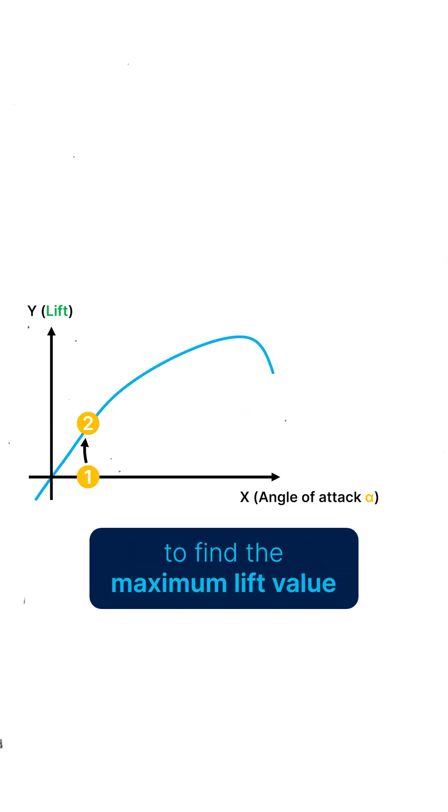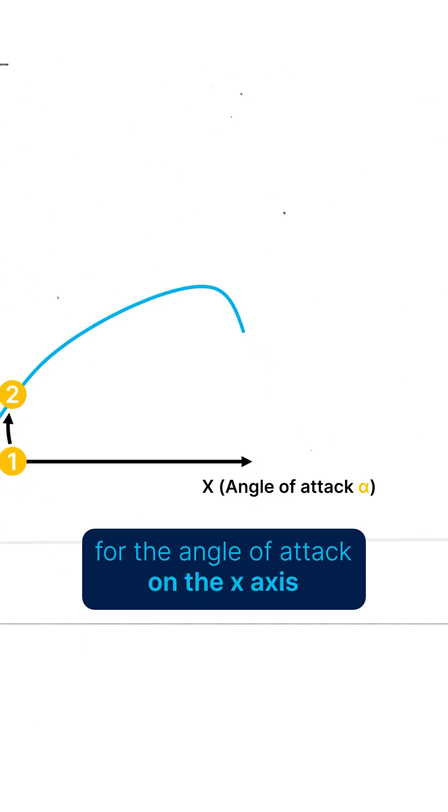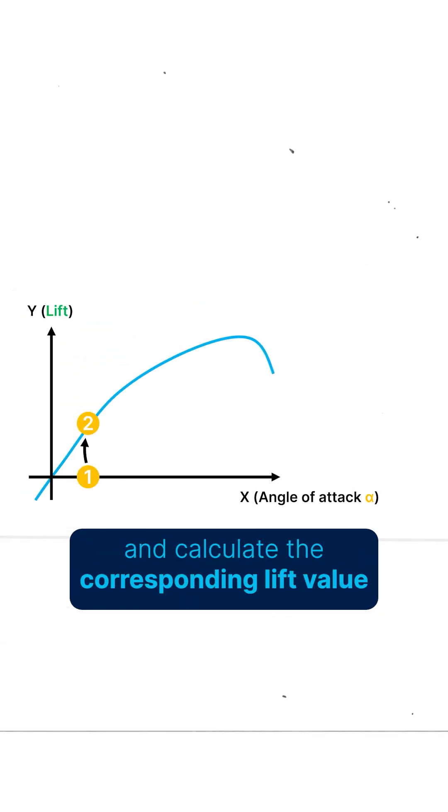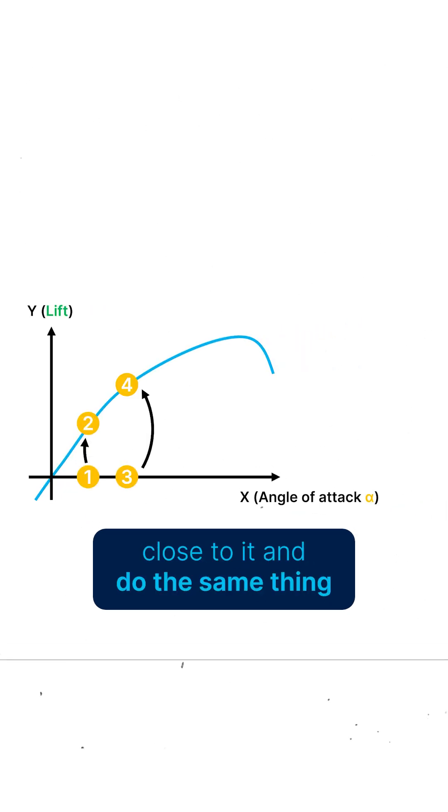To find the maximum lift value, we can start by picking a random value for the angle of attack on the x-axis and calculate the corresponding lift value on the y-axis. We can then pick a second point close to it and do the same thing.